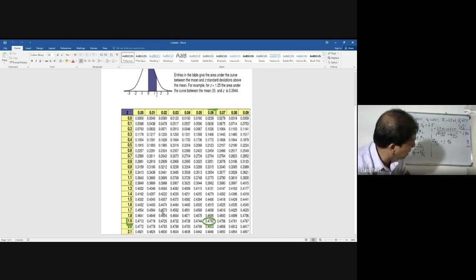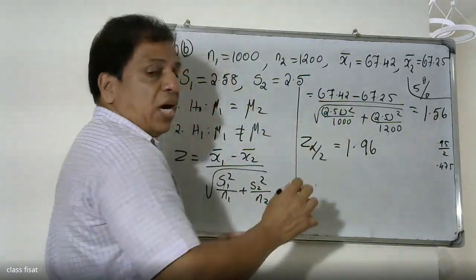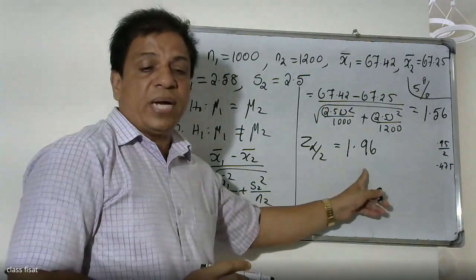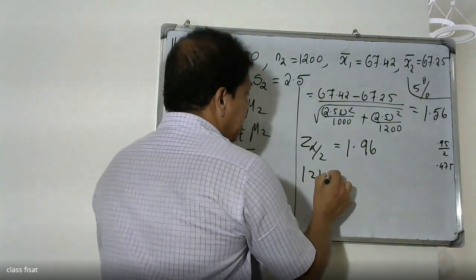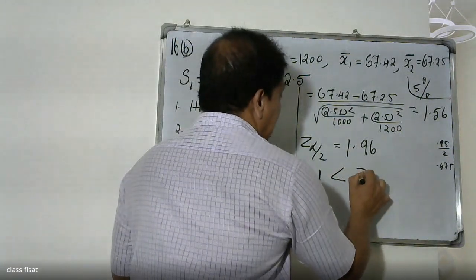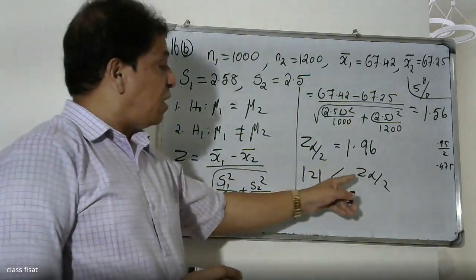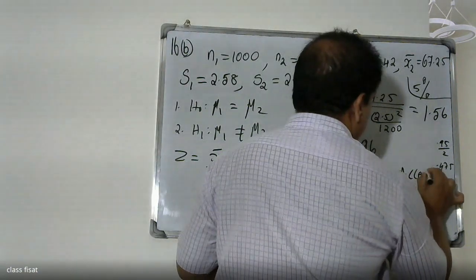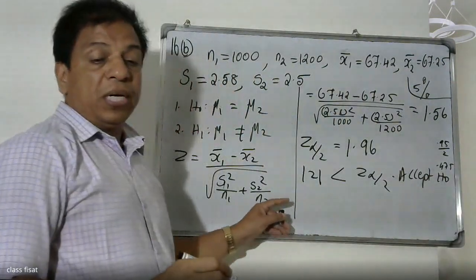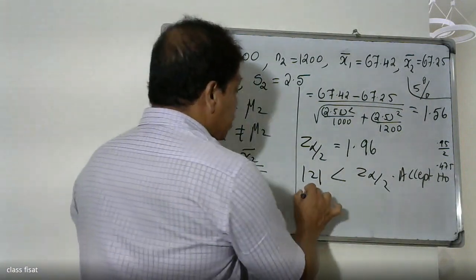1.96 is the value. The calculated value 1.56 is less than Z α/2. Therefore we accept H0. No significance difference.